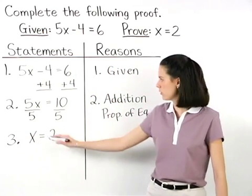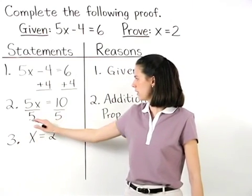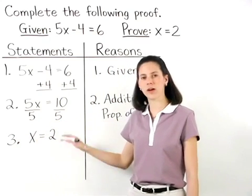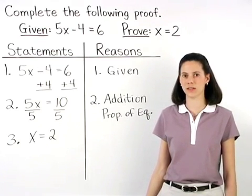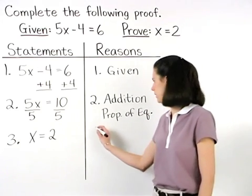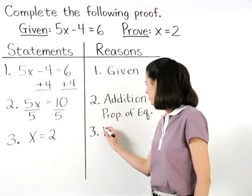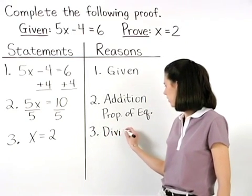And remember, the reason that we can divide by the same quantity on both sides of an equation is based on the division property of equality. So reason 3 is the division property of equality.